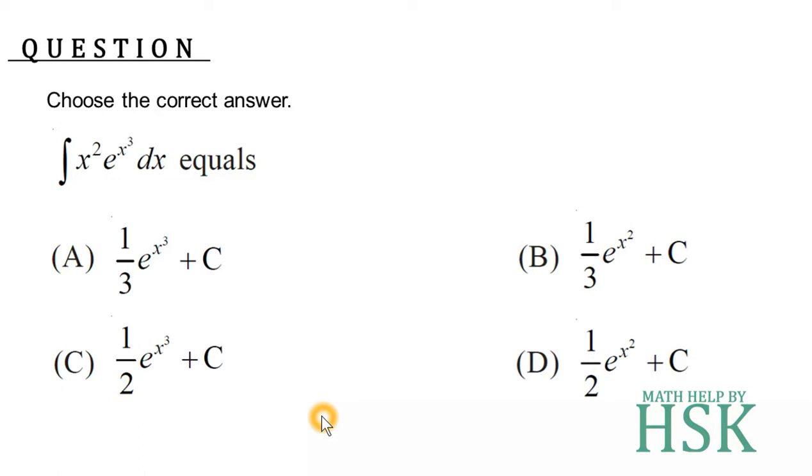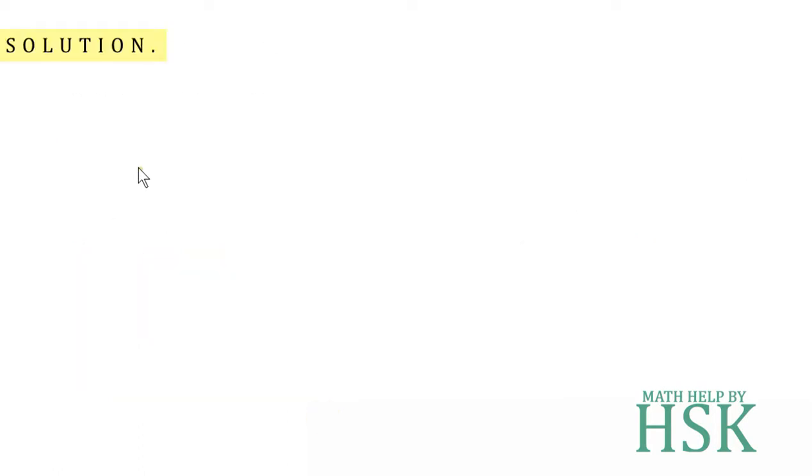Taking the integral x squared times e to the power of x cubed, it is given in the form of a product of two functions. But if I assume x cubed equals t, then the differentiation of x cubed is 3x squared, so there is a chance of substitution.